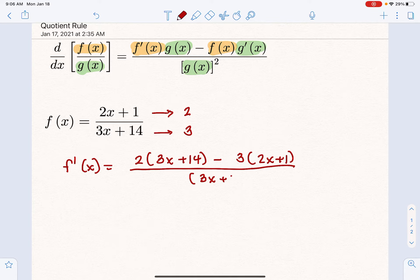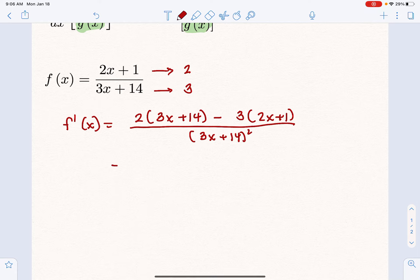That's the key piece that we usually forget. We always forget that denominator squared. So then we simplify the numerator. We have 6x + 28 minus 6x minus 3, all over that denominator squared.